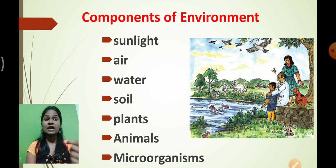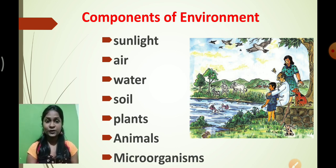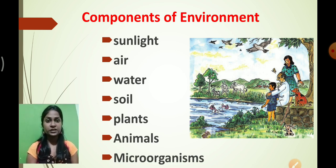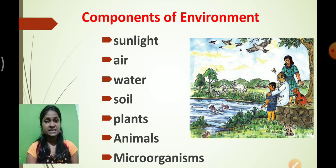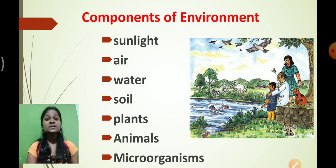Whatever we have seen in this picture — sunlight, air, water, soil, plants, animals, microorganisms — these are all present in nature. Microorganisms are not visible to our naked eye but they are present everywhere: in the air, in the soil, and in the water. Sunlight, air, water, and soil are non-living things, while plants, animals, and microorganisms come under the living category.